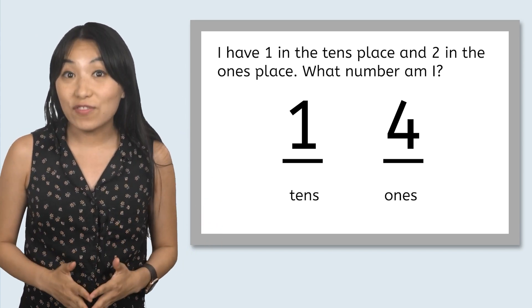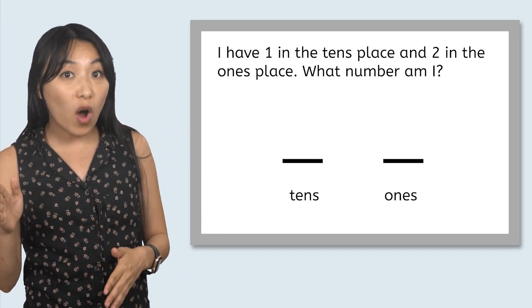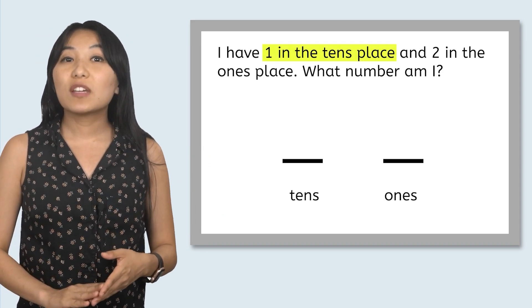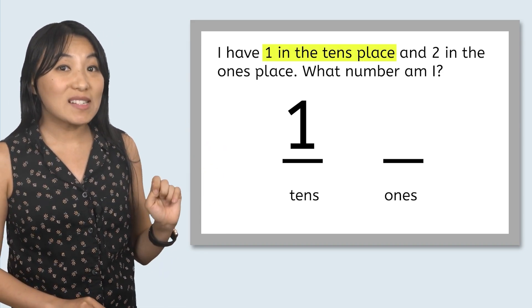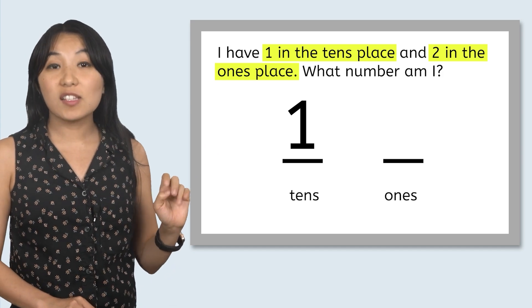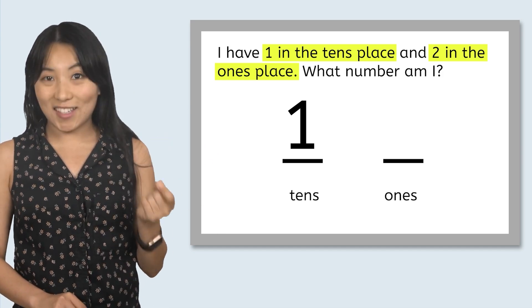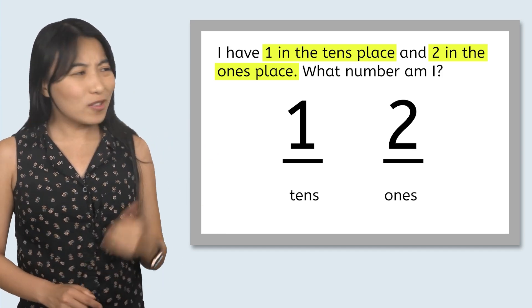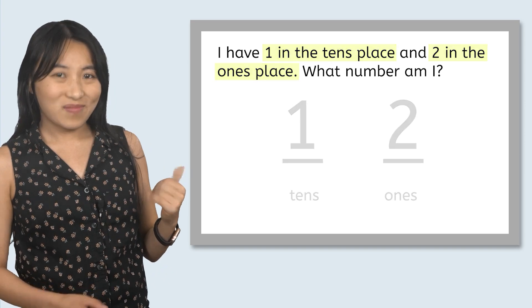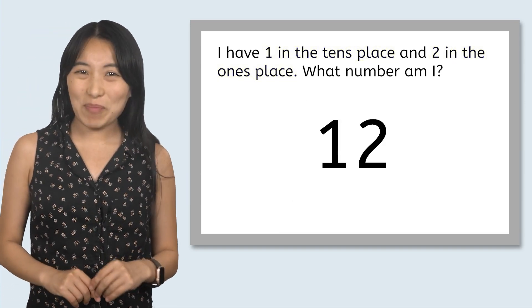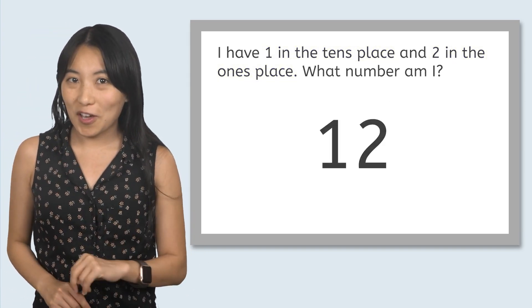So, if this mystery number has a one in the tens place, we can write a one here. This number has a two in the ones place, so we can write a two here. What number do you think this is? Twelve. Great problem solving. Two down, one more to go.